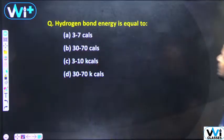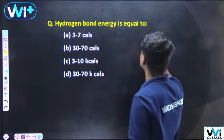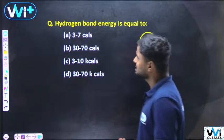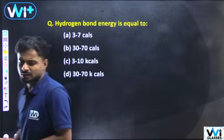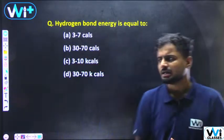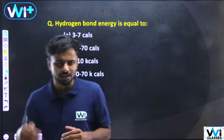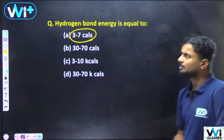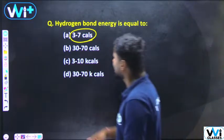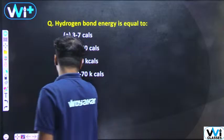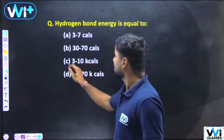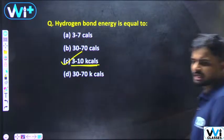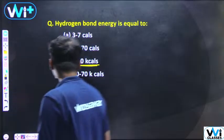Hydrogen H₂ bond energy — hydrogen bond is not a weak or strong bond. The van der Waals force is strong. The bond energy is 3 to 7 kilocalories. The range is 3 to 10 kcal.